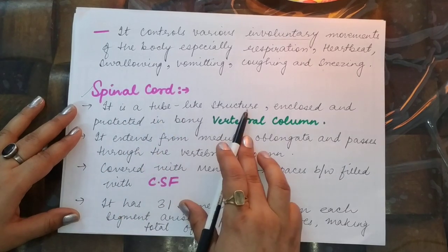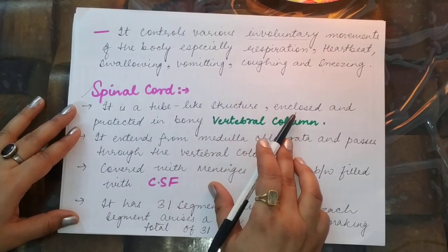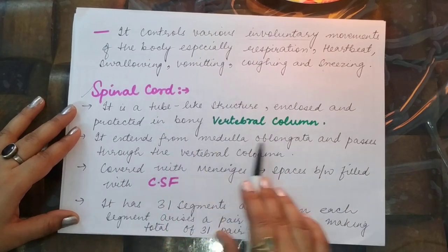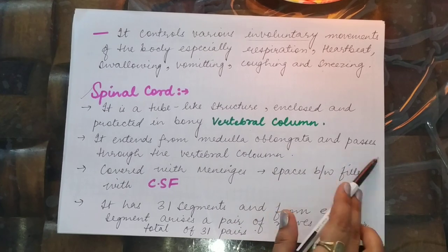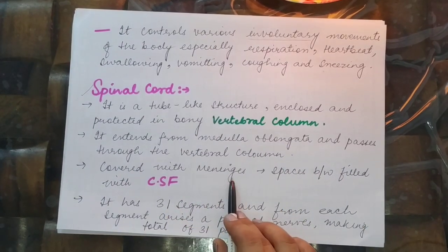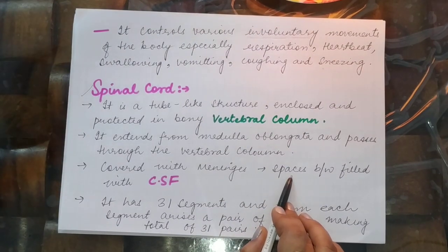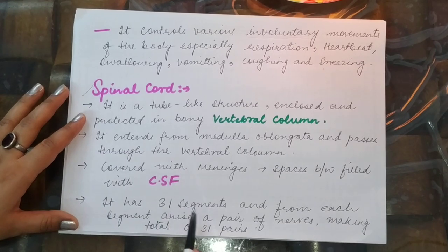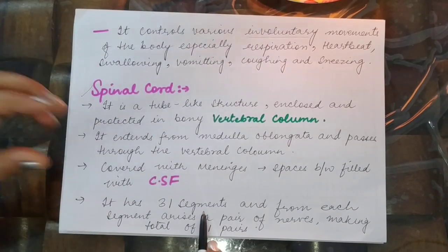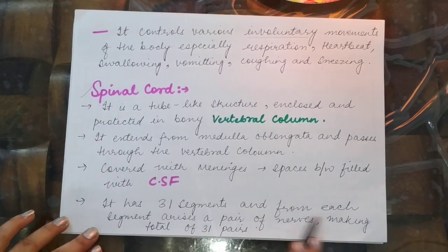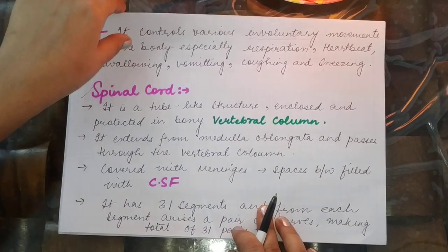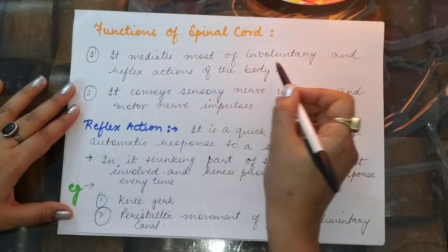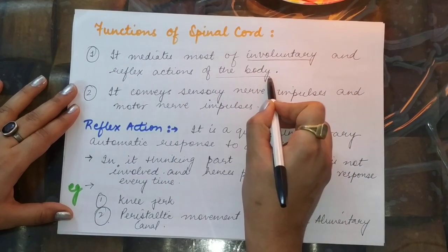The second part of the central nervous system is the spinal cord. It is a tube-like structure at the back of the body, enclosed in a protective bony structure called the vertebral column. It extends from the medulla oblongata and passes through the vertebral column. It is covered by meninges and bathed in cerebrospinal fluid. The spinal cord has 31 segments, and from each segment arises a pair of nerves — giving 31 pairs in total. Its functions include mediating involuntary reflex actions and conveying sensory and motor nerve impulses.